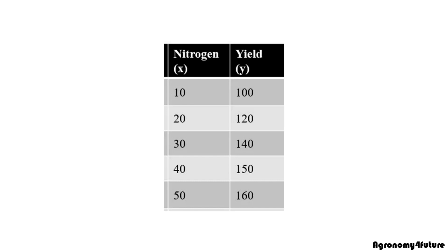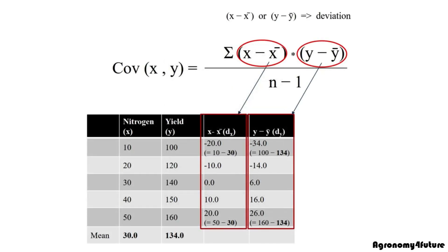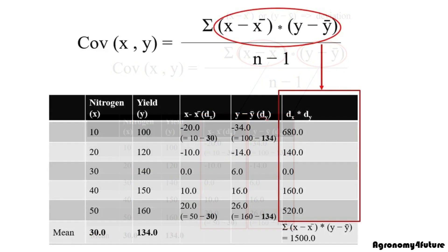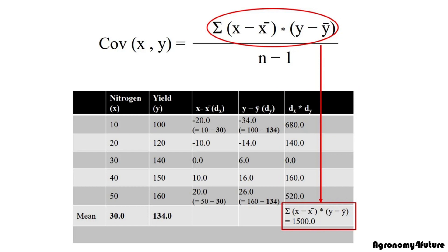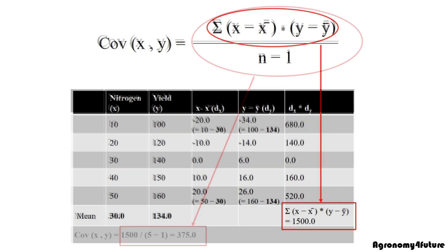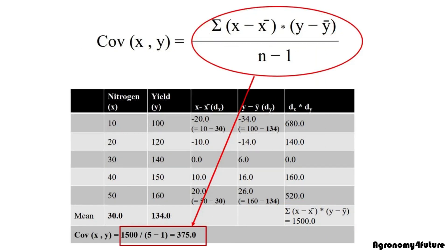First, I calculated deviation x and y. Second, let's multiply each deviation x and y. Third, let's add up all values. Finally, if the sum of all values is divided by n minus 1, where n is sample size, it's covariance.